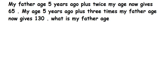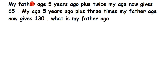Here's a question from linear equations, asked by Rehan. The question is: my father's age five years ago plus twice my age now gives 65. My age five years ago plus three times my father's age now gives 130. What is my father's age? They're talking about a father and son's age and comparing with five years ago.